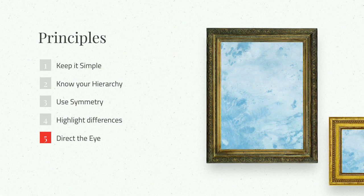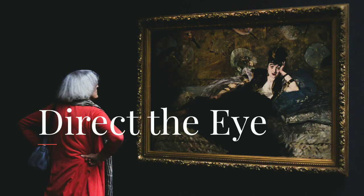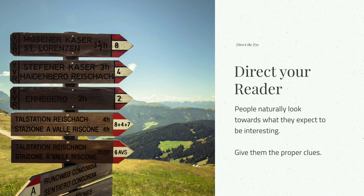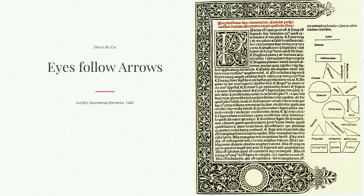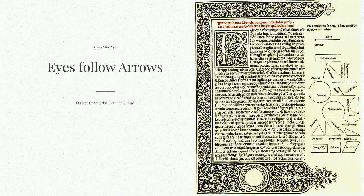Finally, you can direct the eye. It's helpful to direct your reader towards what they expect to be interesting. There are certain clues that tell people a certain area might be interesting. Eyes follow arrows — that's what we expect arrows to be for. In Euclid's geometry here, you are directed to the right-hand content because you see these arrow forms on the left, and you expect that you should look at the content to the right. An arrow doesn't have to be incredibly explicit; a vague arrow shape points people towards things.